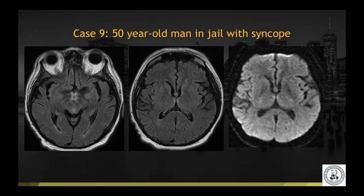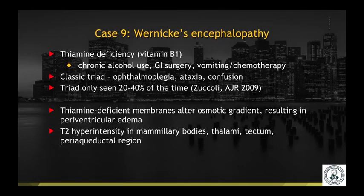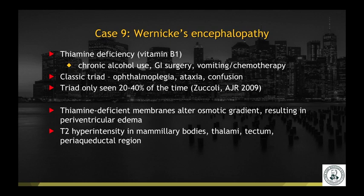Case number nine: a 50-year-old man in jail with syncope. T2 FLAIR and diffusion-weighted imaging demonstrate T2 hyperintensity and reduced diffusion in the mammillary bodies, hypothalamus, and paramedian thalami. This was a case of Wernicke's encephalopathy, typically caused by thiamine deficiency in the setting of chronic alcohol use, bowel surgery, vomiting, and chemotherapy. There is a classic clinical triad of ophthalmoplegia, ataxia, and confusion, although this triad is only seen in 20–40% of cases. It is believed that thiamine-deficient membranes have an altered osmotic gradient, which results in this periventricular edema in this typical distribution.